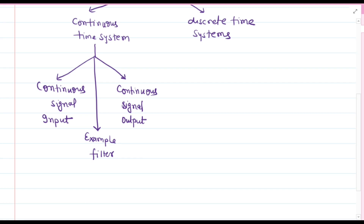In mathematics, continuous time systems are represented using differential equations. These equations describe how the input signal affects the output signal at any given time. The output of a continuous time system depends on both the input signal and its history — that is, how the input signal has varied over time.